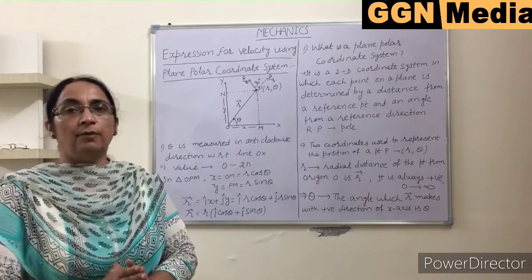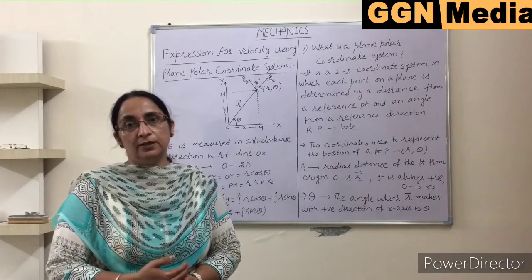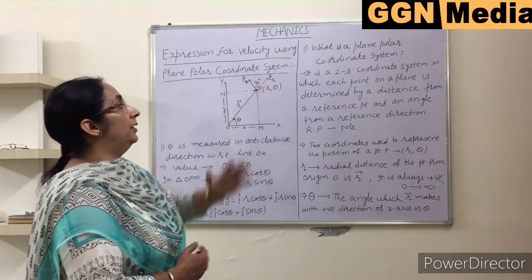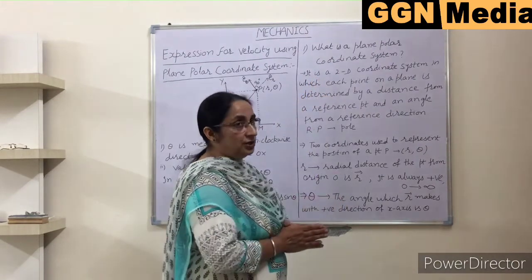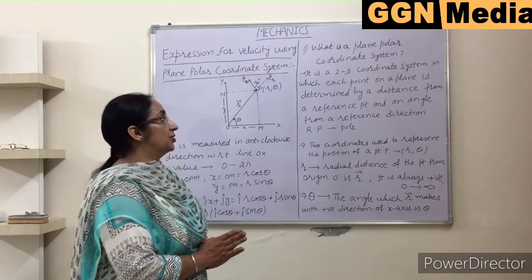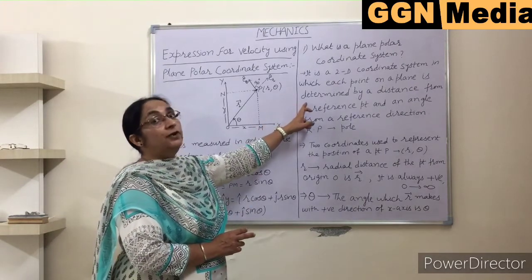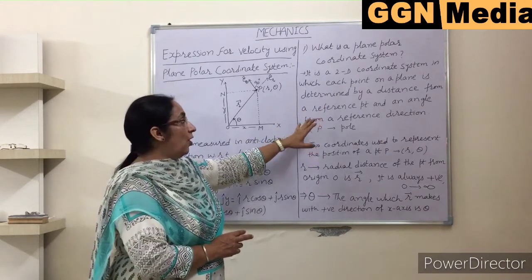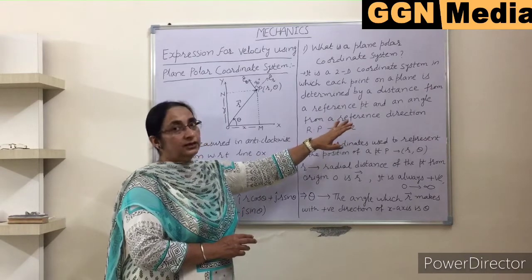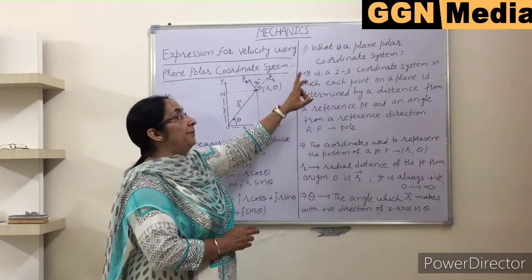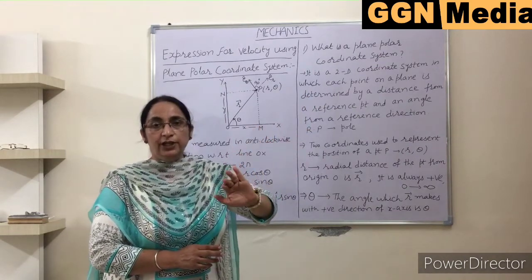Before I start the actual derivation of velocity in plane polar coordinates, you should know what a plane polar coordinate system is. A plane polar coordinate system is a two-dimensional coordinate system in which each point on a plane is determined by a distance from a reference point and an angle from a reference direction. The word 'plane' means we use two coordinates out of three.